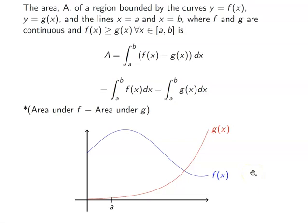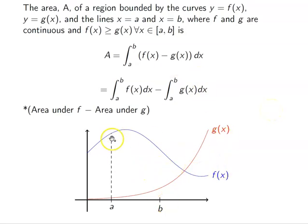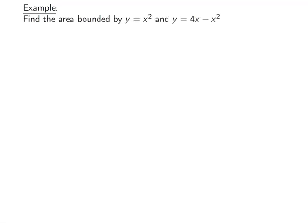Notice there's a portion where g is larger than f, so our bounds should be from a to b where f is always on top, according to the definition. When we get into practice we can adjust this. The area in between from a to b is the area between the curves we're interested in.